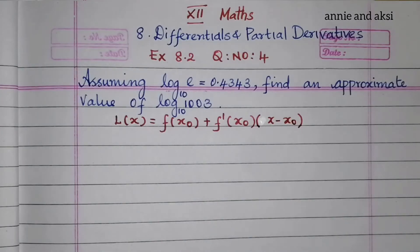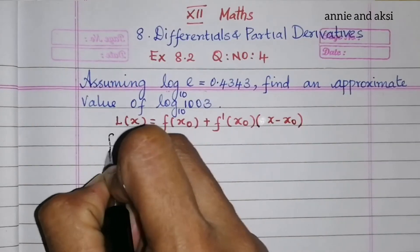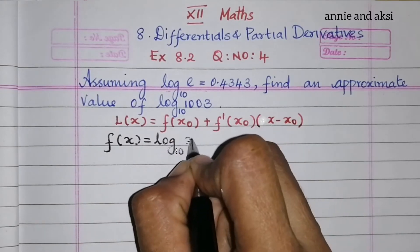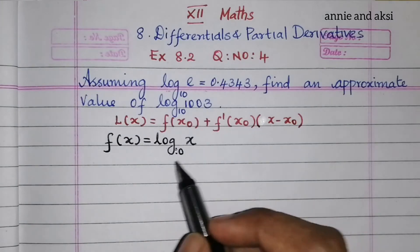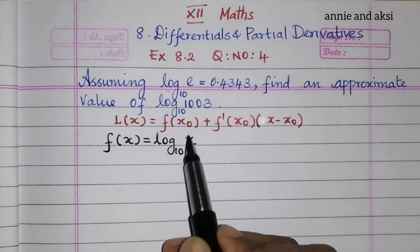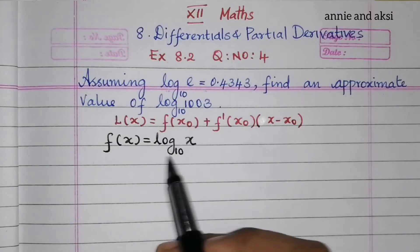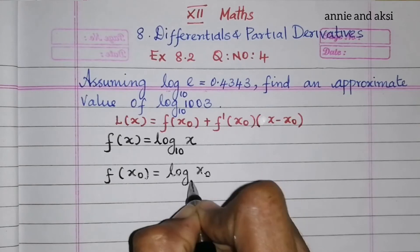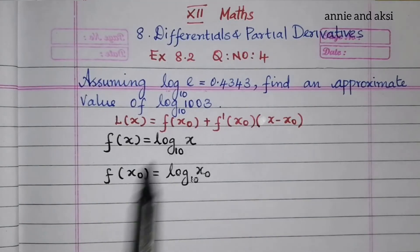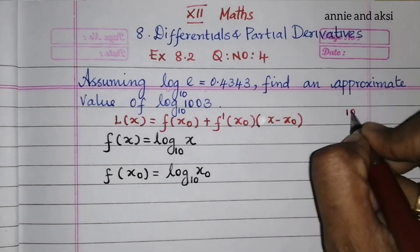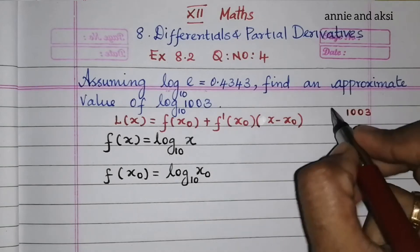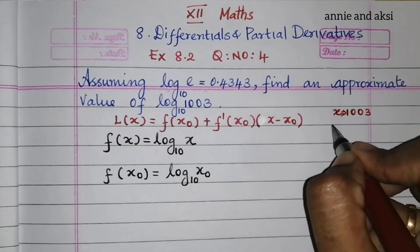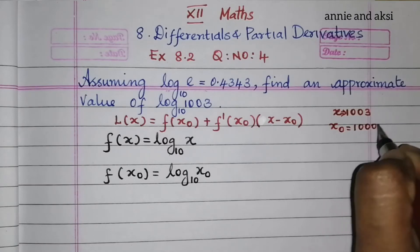Here f(x) = log x to the base 10, and f(x₀) = log x₀ to the base 10. We choose x₀ = 1000, which is the nearest convenient value to 1003.